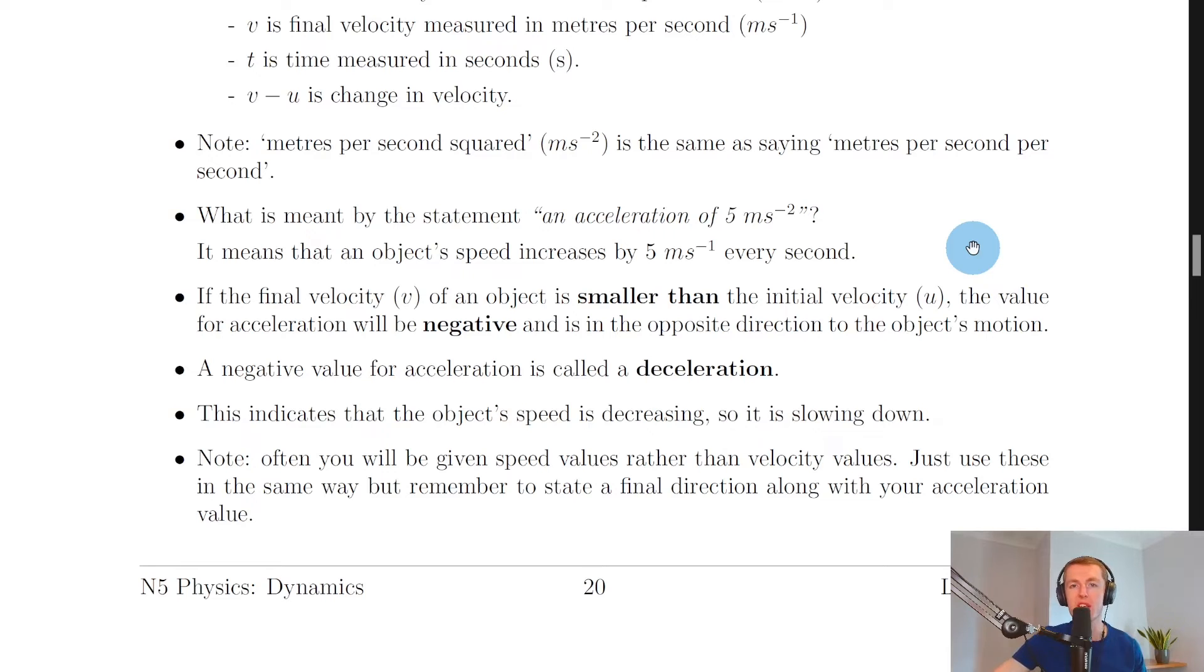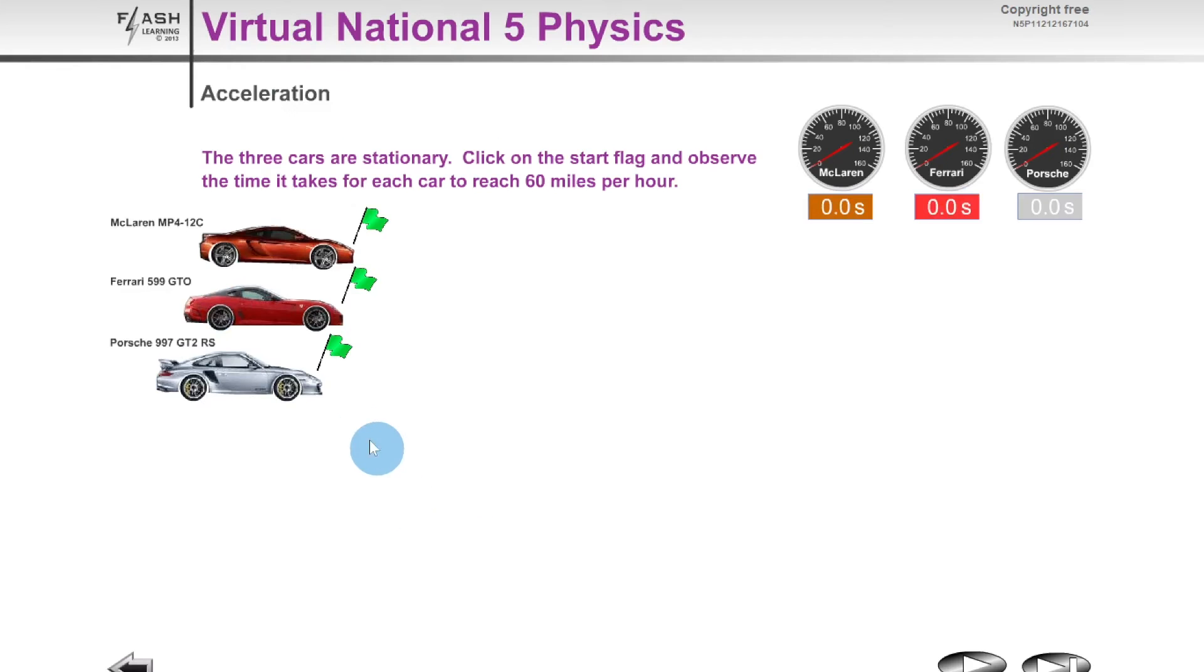I'm just going to show you a quick simulation to help you visualize this. So here we have three cars and we've got a timer for each which is going to time how long it takes each of these three cars to reach 60 miles per hour. So if we start with this one down the bottom, the Porsche, you'll see that it takes a time of 3.3 seconds to reach 60 miles per hour.